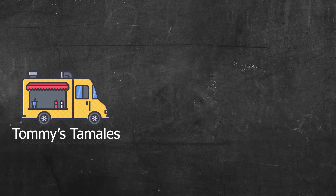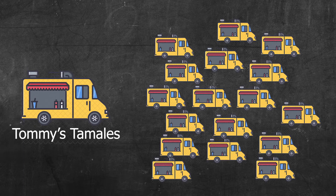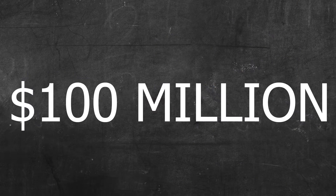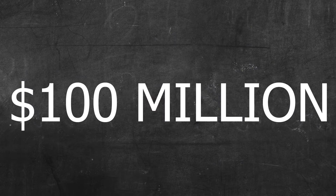Imagine you start a food truck called Tommy's Tamales and it's extremely successful, so you decide to open fifty more Tommy's Tamales. One day, LeBron James eats at one of your trucks and becomes deathly ill because an employee's hair fell into the food. LeBron sues your company for $100 million and takes all your food trucks and everything you own. You'll have to continue paying whatever's left of that $100 million debt until you die or find some way to start with a clean slate.